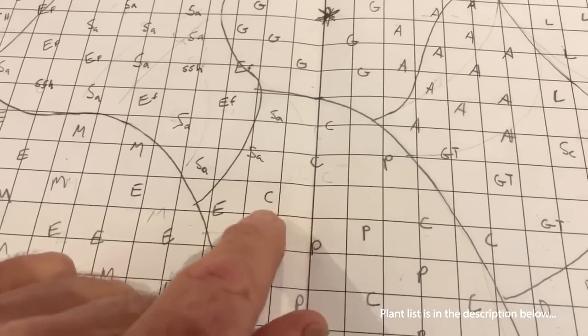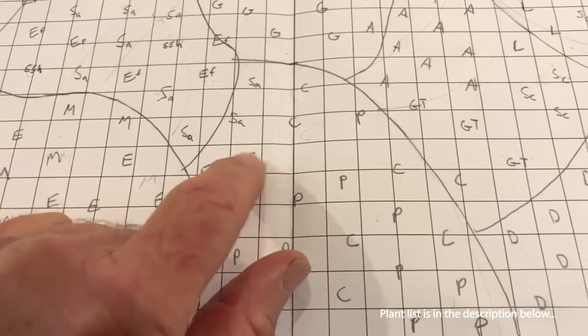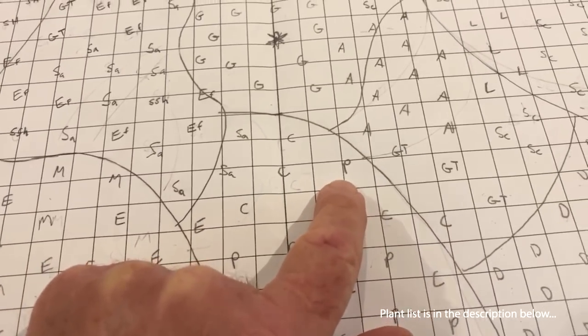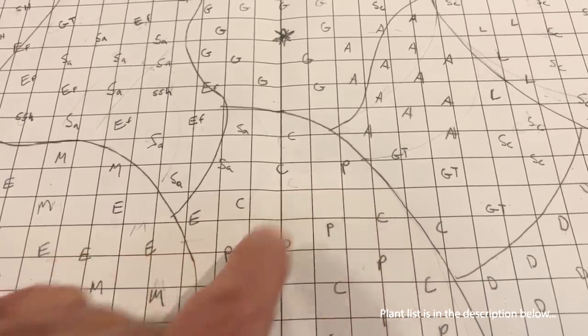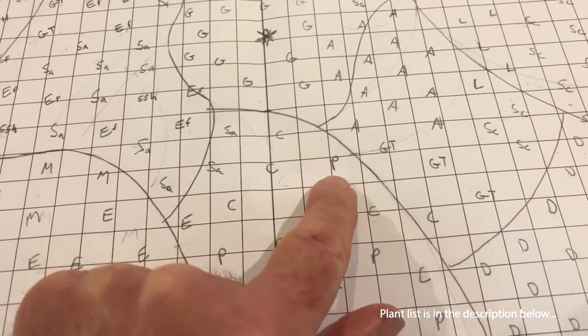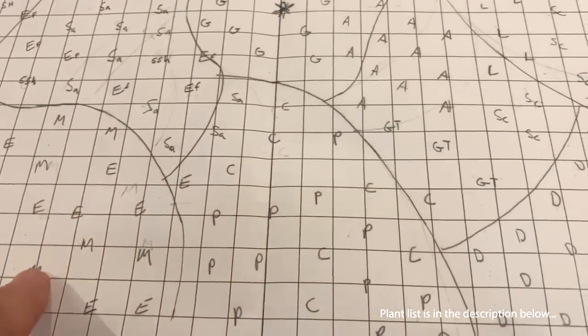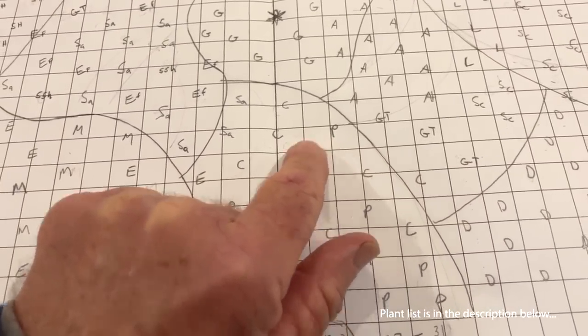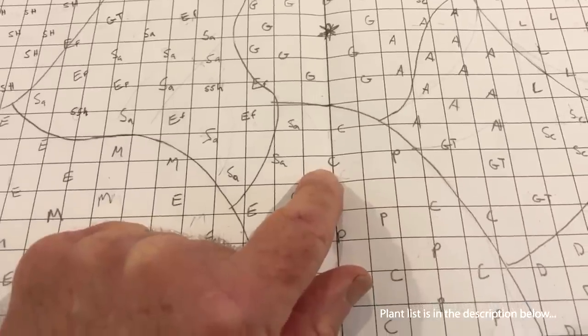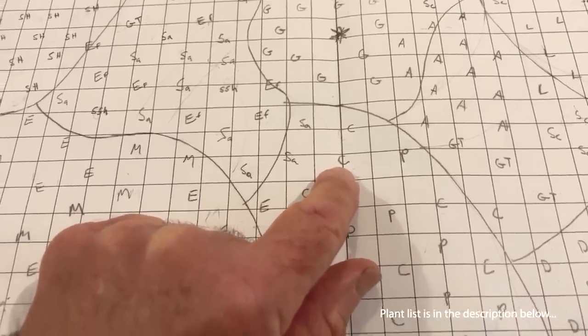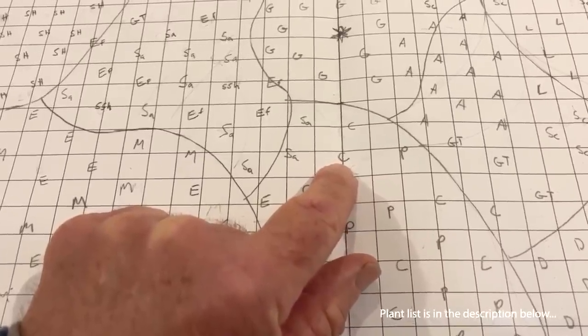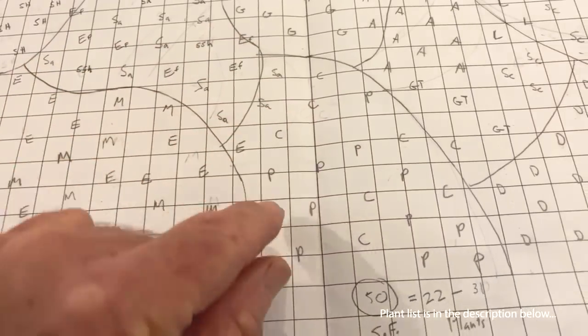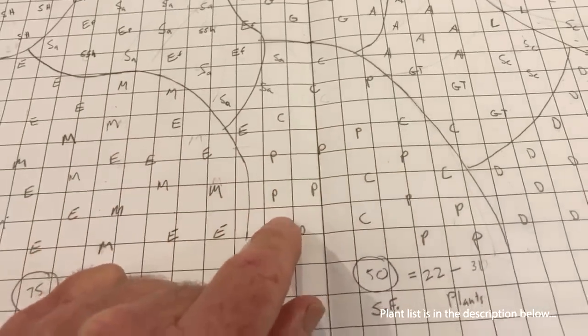Then you can see the space here. This is Coreopsis verticillata 'Golden Showers'. This is Panicum 'Ruby Ribbons'. Now these panicums are slightly shorter than the Monarda, but not by much. But the foliage is denser. You can't see through the foliage like you can on the Monarda. The foliage on the Panicum is a nice red color in mid-August. Coreopsis is golden yellow, dense foliage, and it's about as tall as it is wide. It's about 36 inches tall with short rhizomes, gets around 30 inches wide in four years.